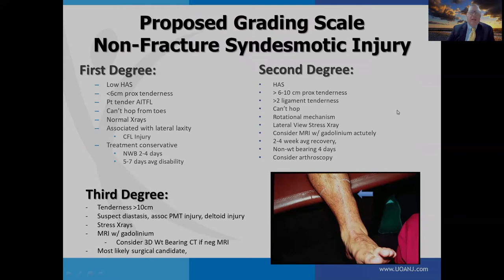I propose a grading scale based on tenderness length: first degree is the low high ankle sprain; second degree is 6 to 10 centimeters of proximal tenderness, indicating at least two-ligament injury. They can't hop and the mechanism is rotational. I recommend stress x-rays and consider MRI with gadolinium acutely. Conservative treatment may be two to four to six weeks, but there is a high incidence of re-injury and chronic problems — these athletes aren't the same if they try to come back the same season.